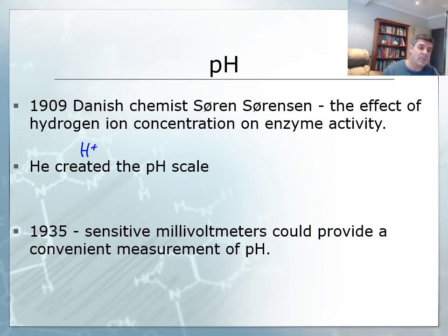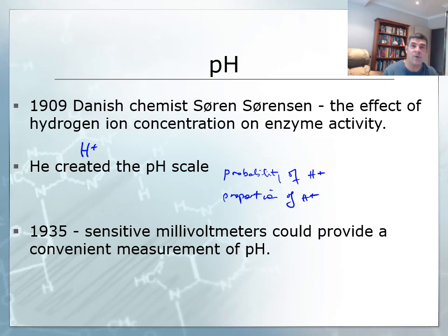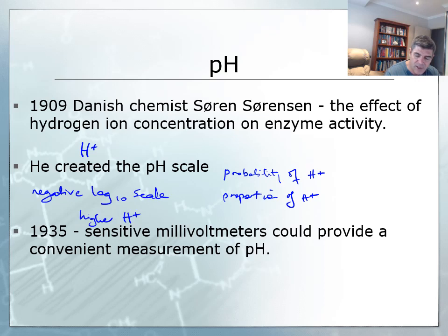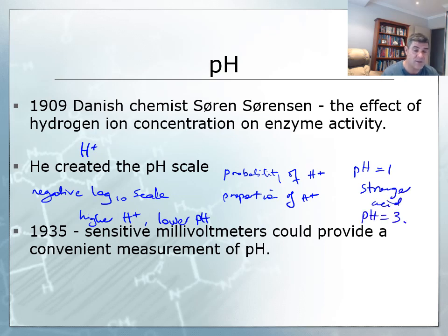It was Sorensen who created the pH scale. People get caught up with what the 'P' in pH stands for — you can talk about this as a probability or proportion of hydrogen ions. The most important thing to be aware of is that pH is a negative log scale, a log base 10 scale. What that means is the higher the concentration of hydrogen ions, the lower the pH. So a pH of 1 is a stronger acid than a pH of 3 — smaller values mean stronger acid solutions.